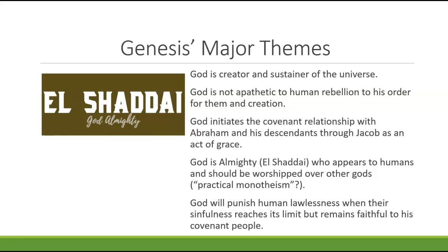God will punish human lawlessness when their sinfulness reaches its limits — as if he allows rebellion for a time, but once it reaches a certain stage, he responds. Yet he remains faithful to his covenant people. Even when they are sinful and in rebellion, he responds as part of the covenant, but keeps the covenant in place even when they act as if it isn't. That's a brief introduction to the book of Genesis and its themes and particular content.